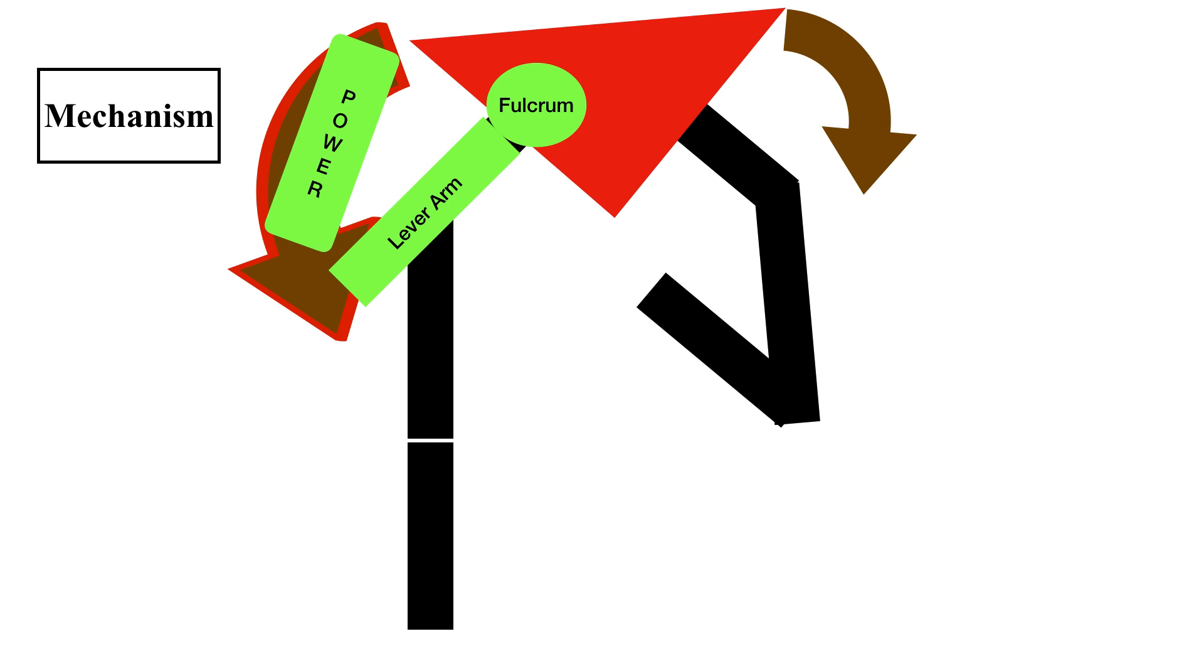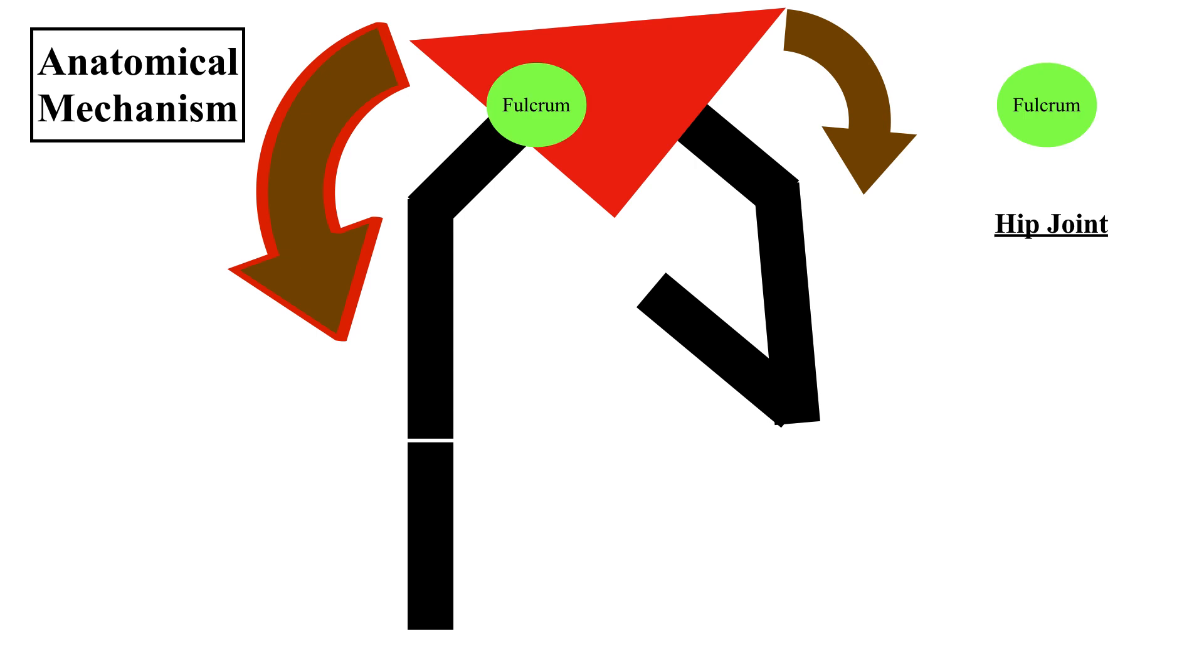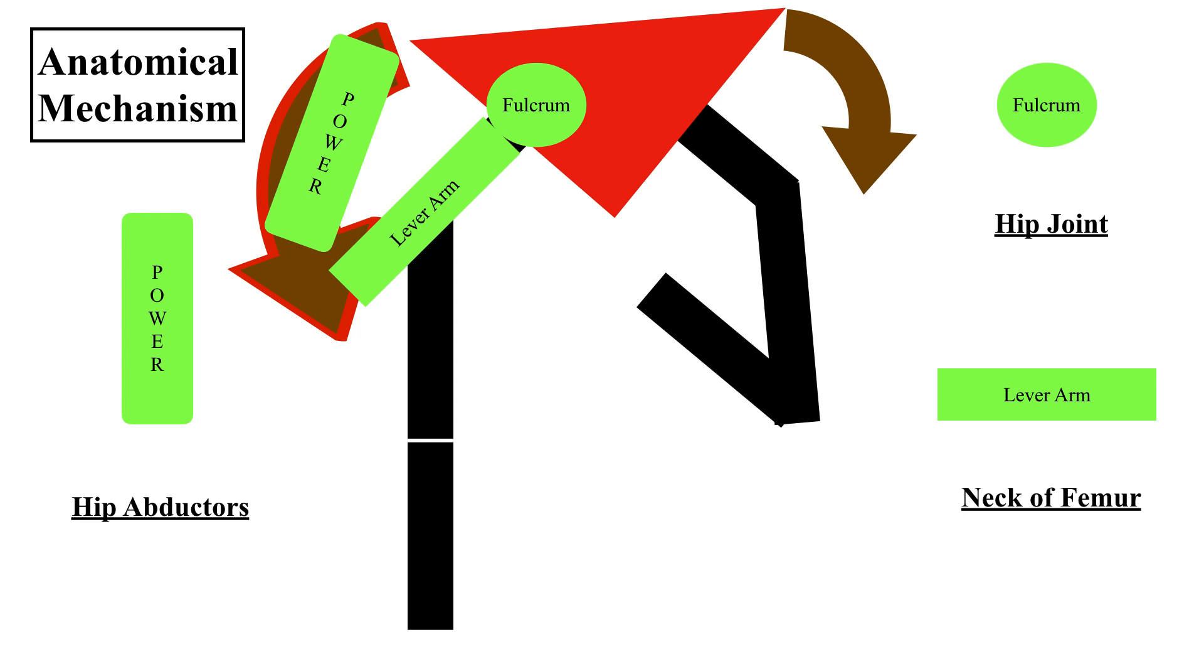Now coming to the anatomical parts of these three structures, the fulcrum is formed by the hip joint over which the entire pelvis and the opposite lower limb rotates. The lever arm that supports this fulcrum is the neck of the femur and the power which drives the entire mechanism is provided by the hip abductor muscles that is gluteus medius and minimus.